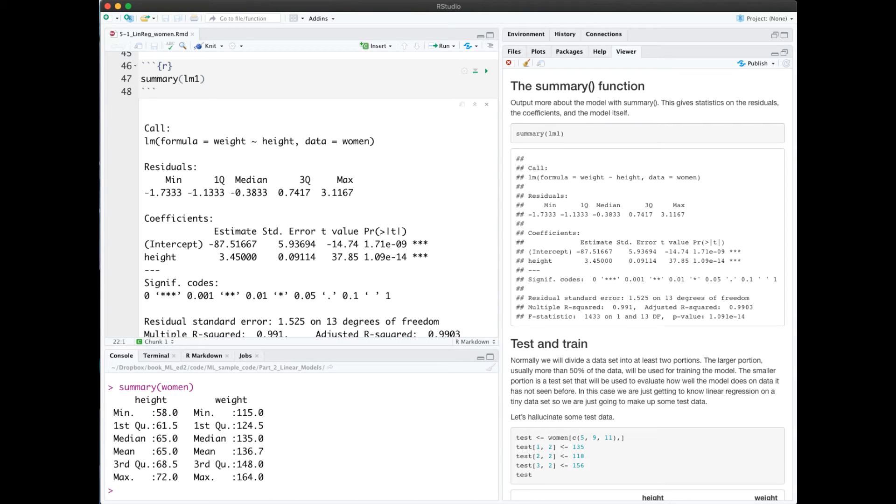Previously we've used the summary method on data. I have an example here in the console, I did a summary of the women data, and it gives us statistical information about each column. But summary is overloaded to give us summaries of models as well.